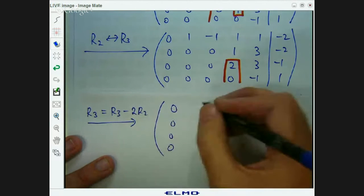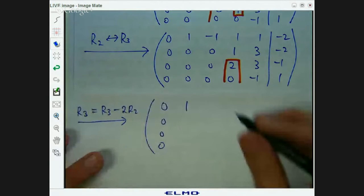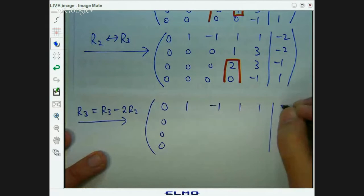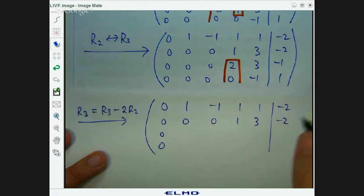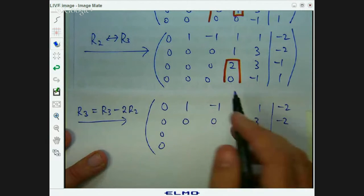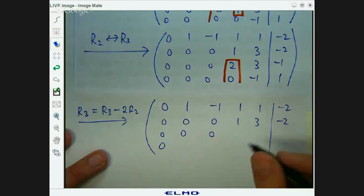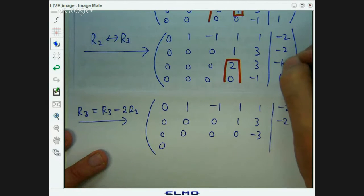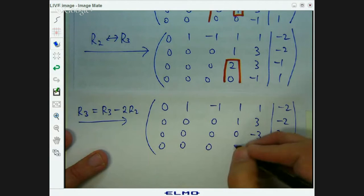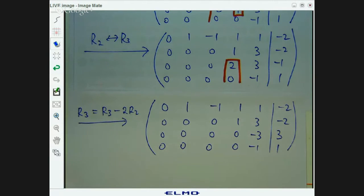So row three equals row three minus two row two. So I've got the same things here. Zero, zero, zero. So that's going to become zero. Three minus two times three, that's going to be negative three. Negative one minus two times negative two, that's negative one plus four, which is three. And the bottom row doesn't change.